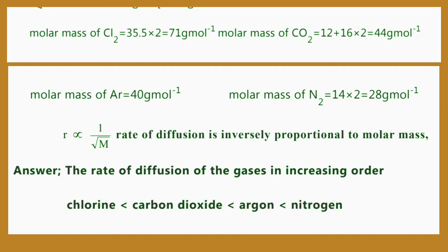Carbon dioxide is 44 grams per mole. Argon is 40 grams per mole. Nitrogen is 28 grams per mole. Graham's Law of gaseous diffusion is 1 divided by the square root of molar mass.